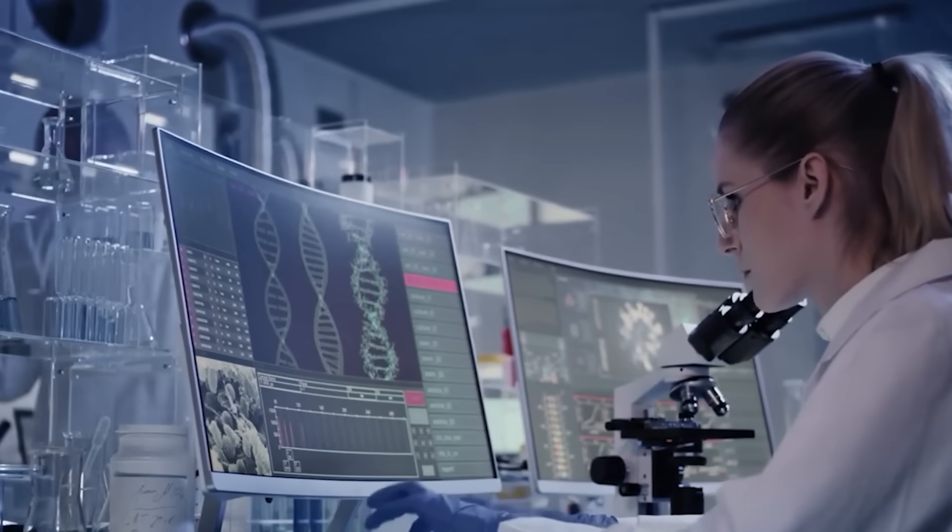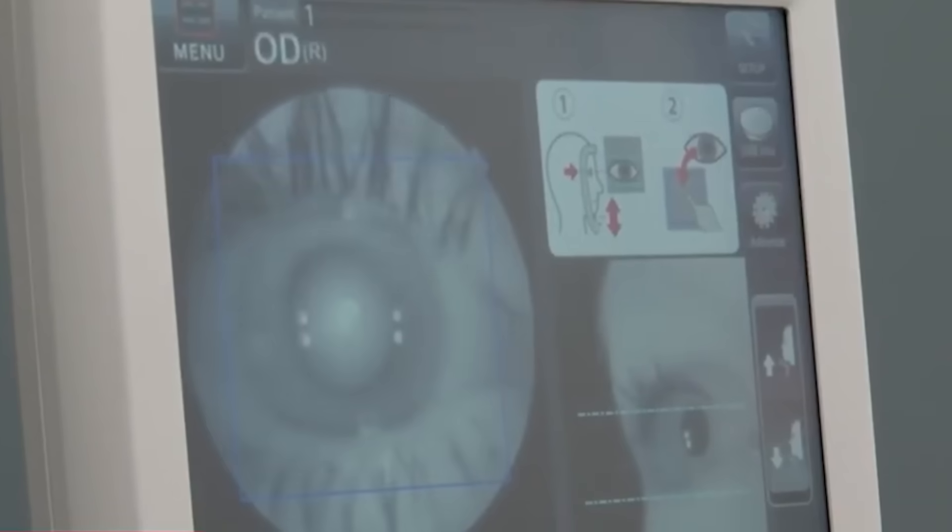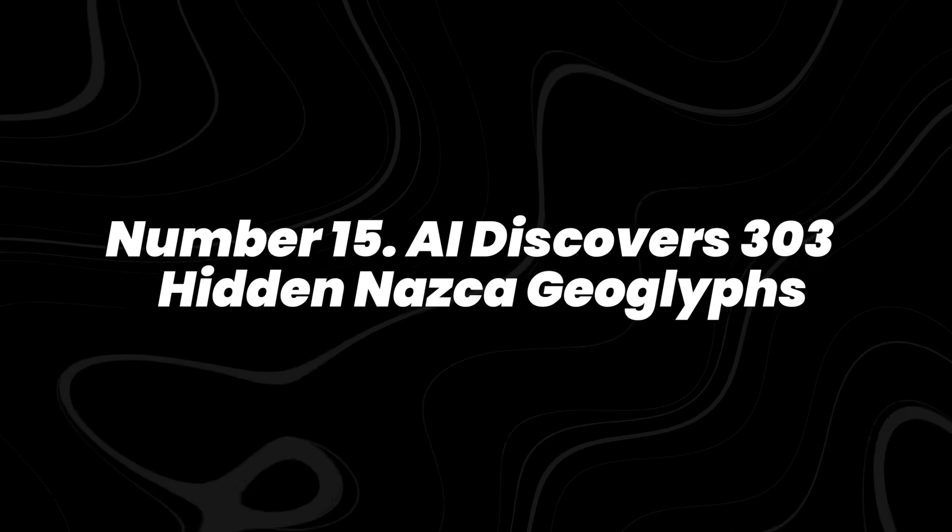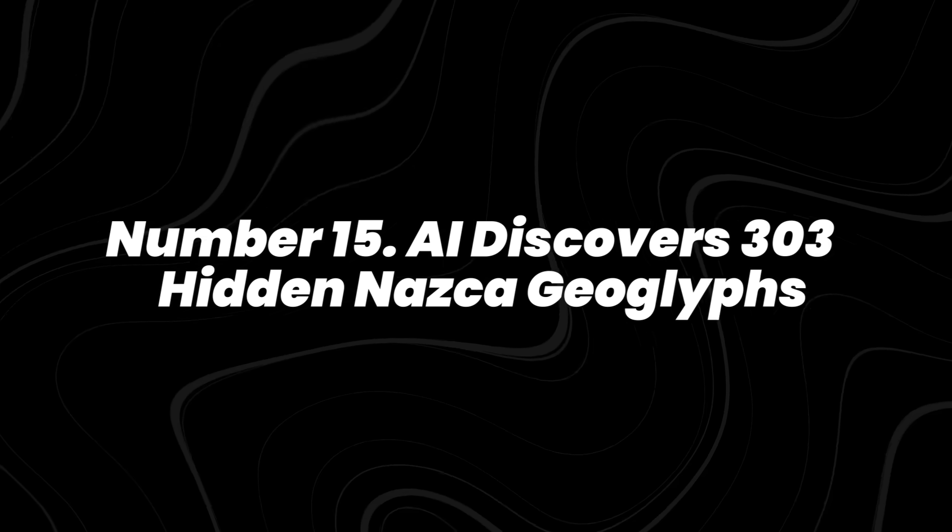These are the 15 new discoveries made by AI. Number 15, AI discovers 303 hidden Nazca geoglyphs.